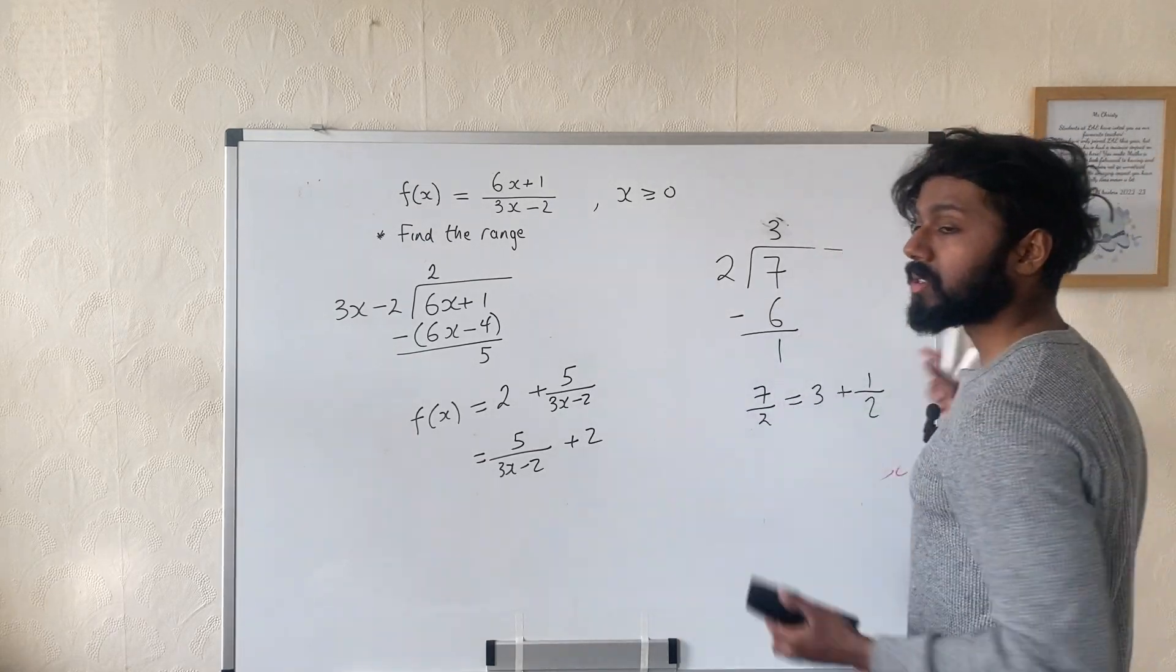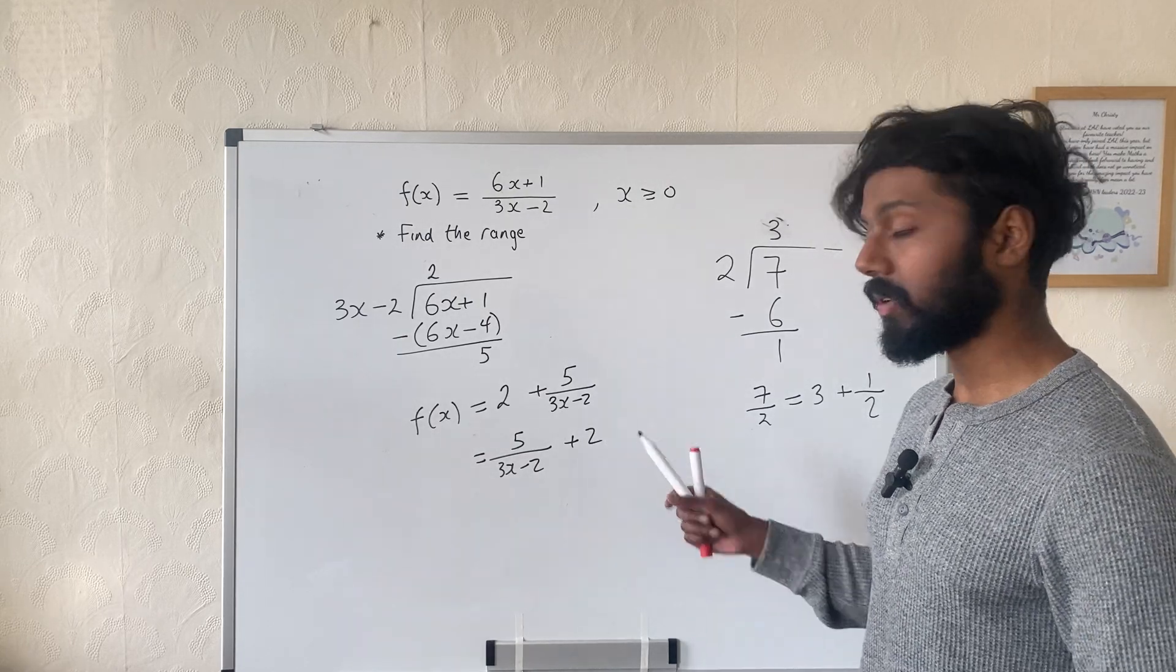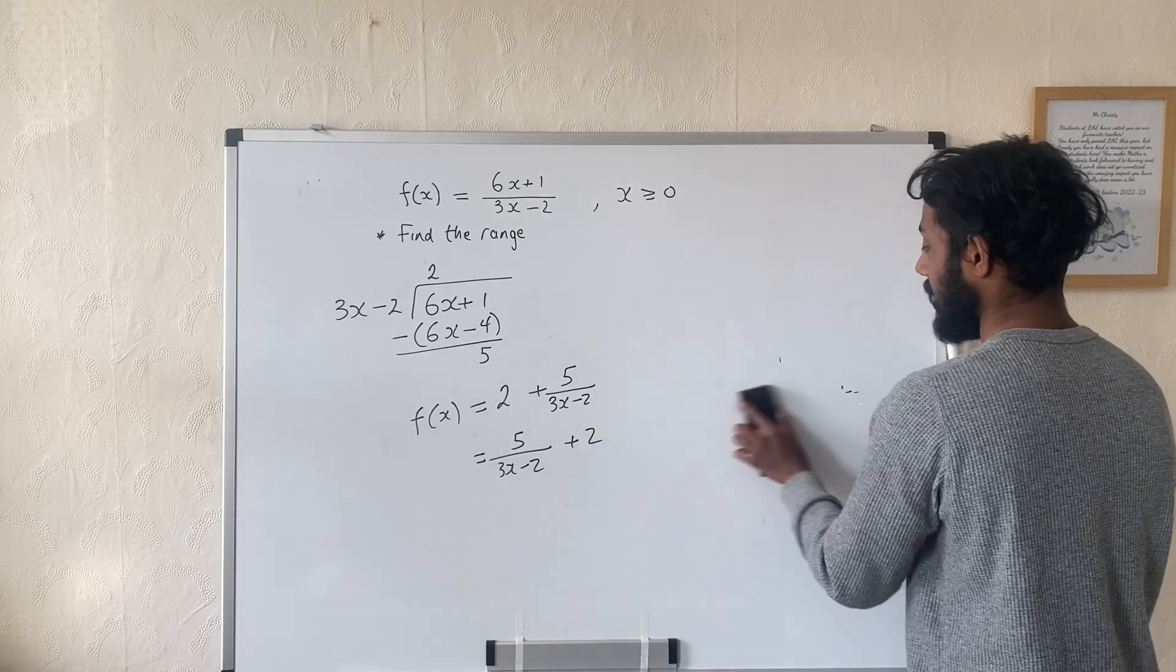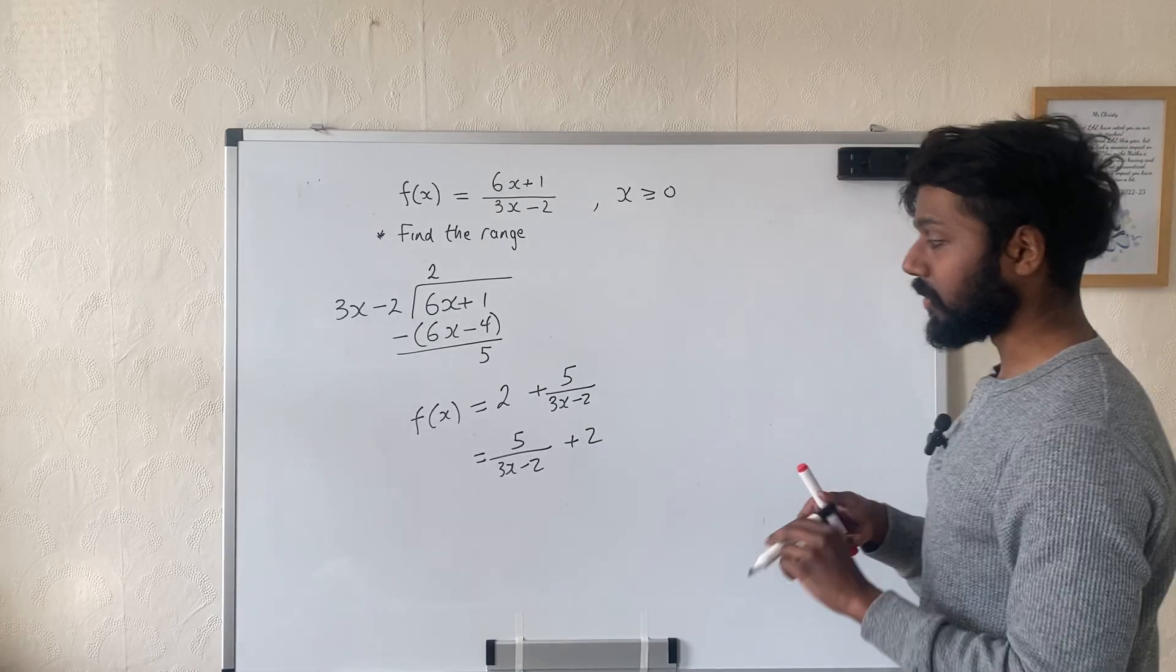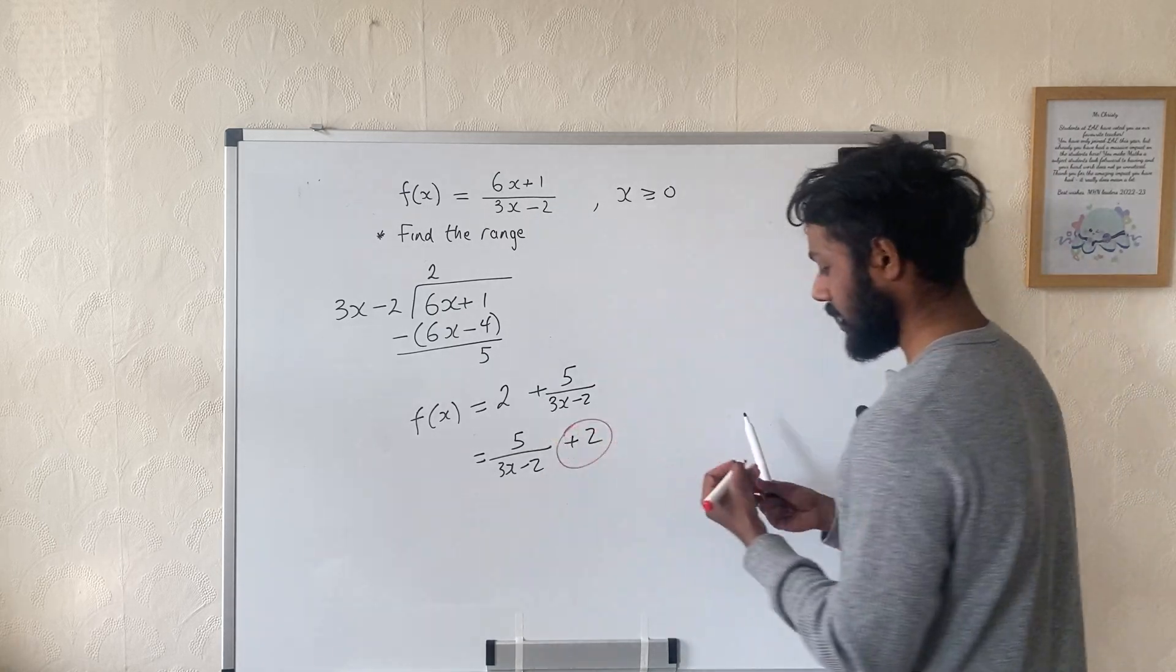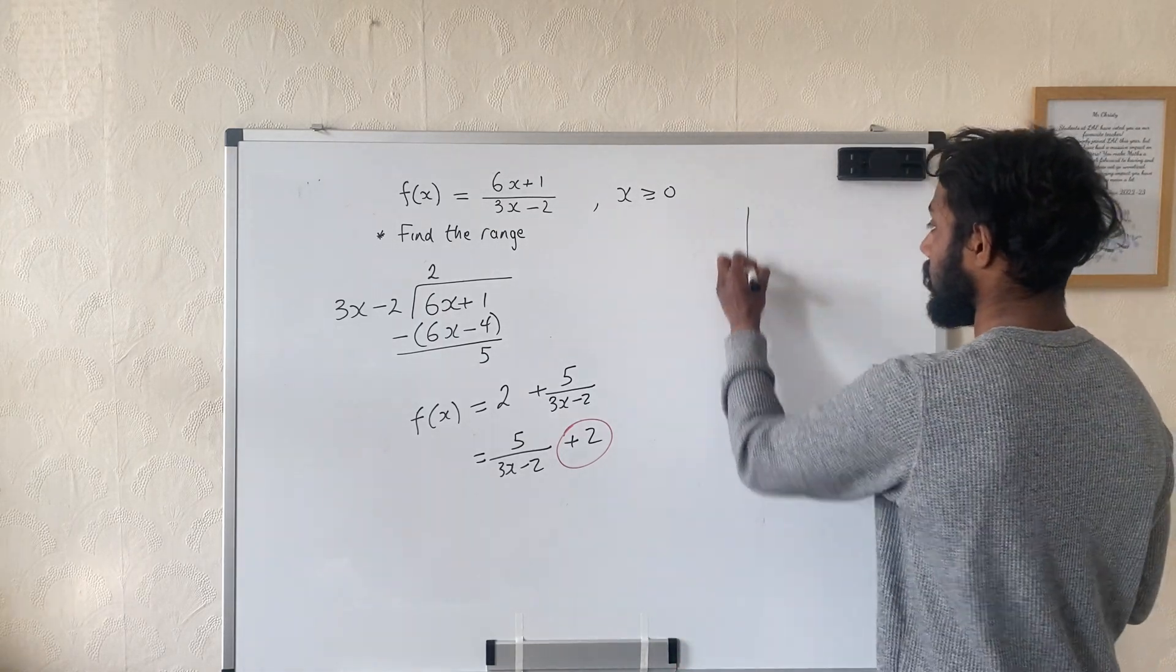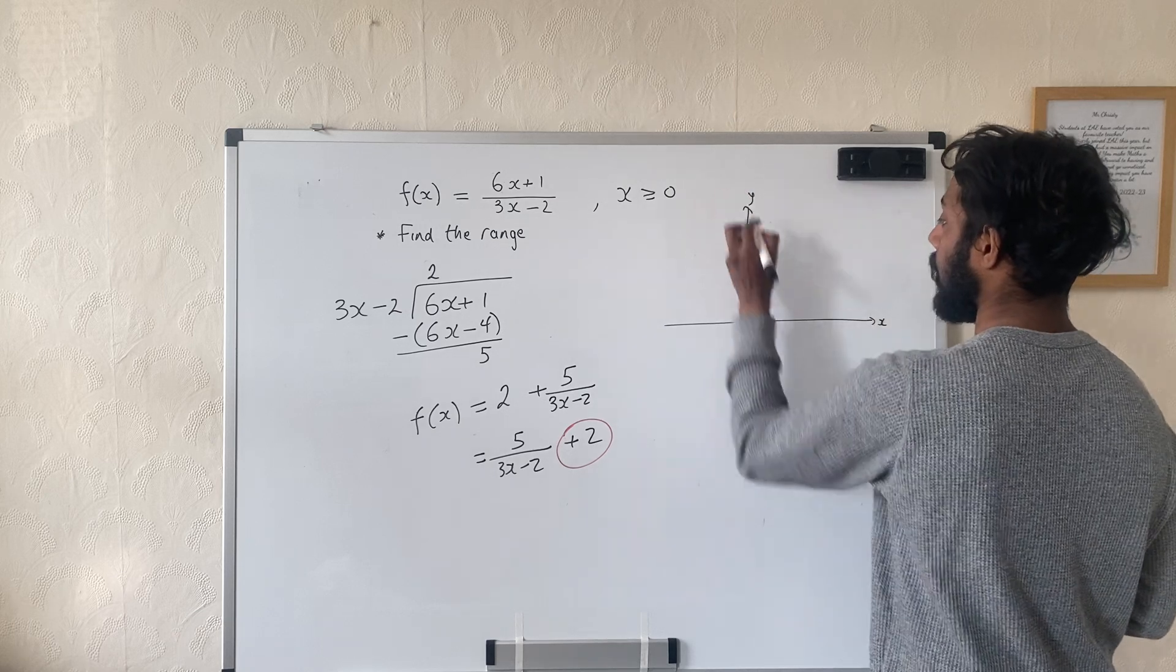And the whole purpose or the whole point of this was to find the asymptotes of the graph and also which quadrants I would be in. Okay, let me explain. So first of all, this number here, number on the outside, corresponds to the horizontal asymptote. So we're going to have a horizontal asymptote at y equals 2.